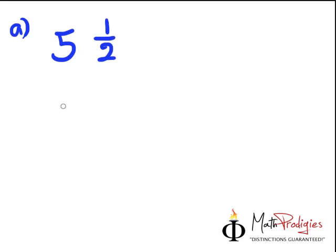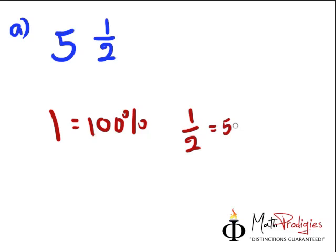Anything which is a whole, for example, 1 is a whole, 1 whole, equals to 100%, okay? And half, for example, equals to 50%. Why? Let me show you why.